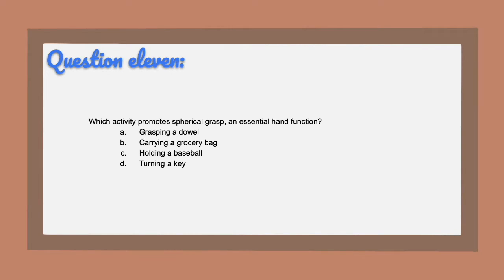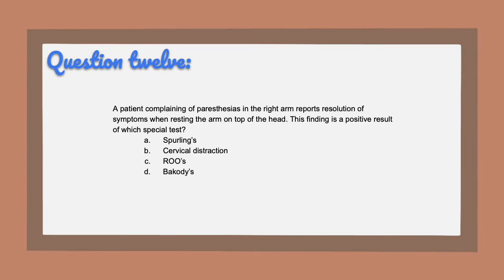Question eleven: which activity promotes a spherical grasp in essential hand function? A, grasping a dowel. B, carrying a grocery bag. C, holding a baseball. Or D, turning a key. Question twelve: a patient complaining of paresthesias in the right arm reports resolution of symptoms when resting the arm on top of the head. This finding is a positive result of which special test? A, Spurling's. B, cervical distraction. C, Roos. Or D, Bakody's.